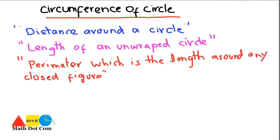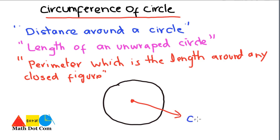Let's see diagrammatically what the circumference is and how we can label it on a circle. Let's draw a circle. We can label its different parts — this is the center of the circle. From this point, all points on the circle are equidistant from each other, so that together they form a circle. Multiple points on the circle are equidistant throughout, and together they make a circle.